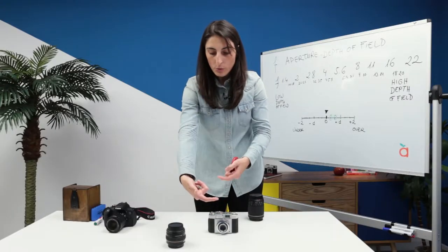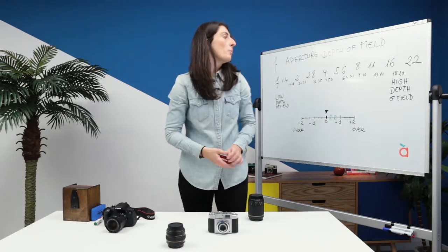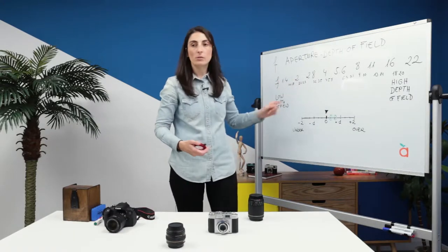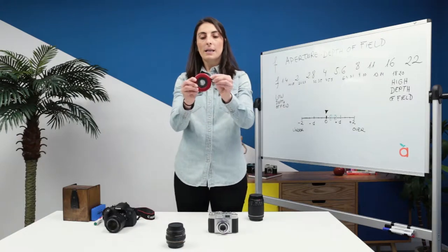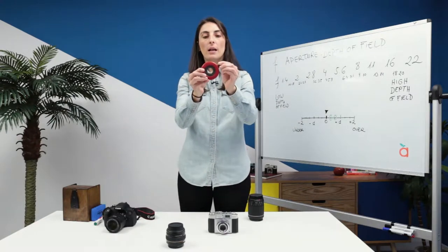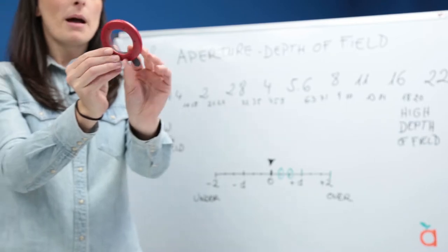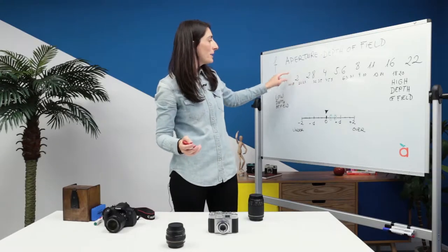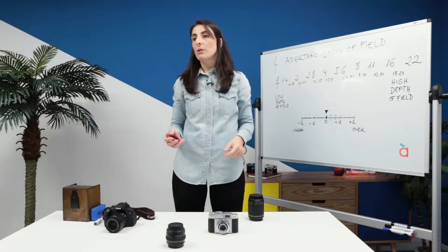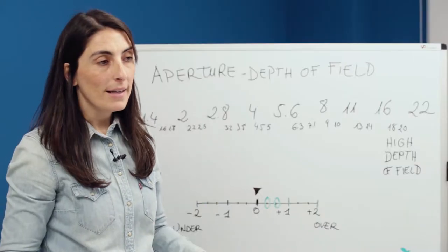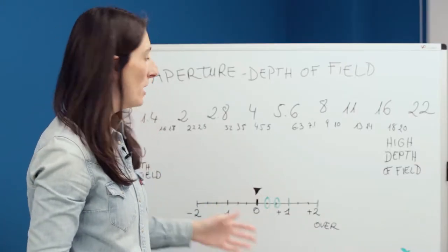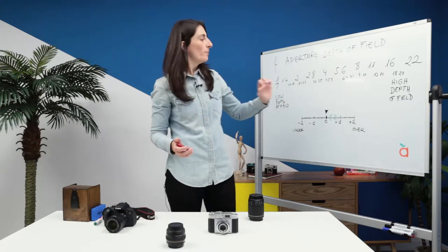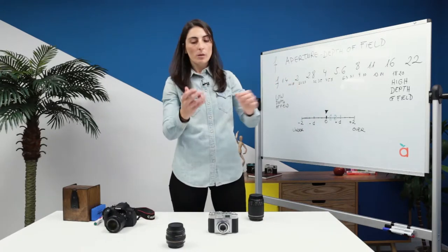Is it possible to reduce the focal distance? Yes, it is. We are going to use aperture options. Remember that aperture refers to how open or closed the iris in the lens is. So if the iris — the hole of the lens — is open, we are letting more light come in through the camera. As a consequence, the depth of field is going to be lower and we will be able to get a focused object and blur the rest of the image.